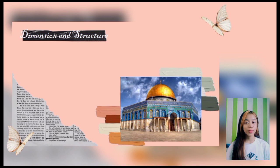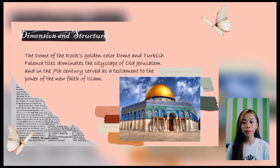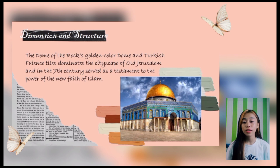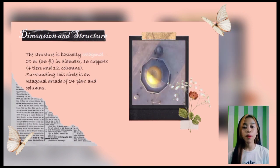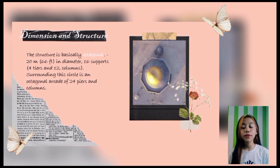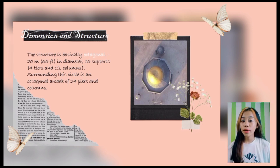The Dome of the Rock's golden-colored dome and Turkish faience tile styles dominate the skyline of Old Jerusalem, and in the 7th century served as a testament to the power of the new faith of Islam. The structure is basically octagonal, capped at its center by a dome approximately 20 meters in diameter, mounted on an elevated circular drum standing on 16 supports, divided into 4 piers and 12 columns.